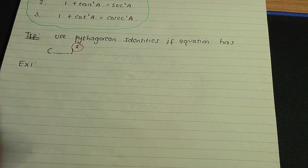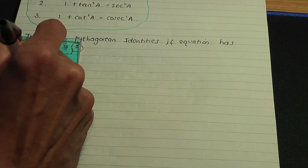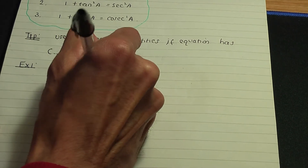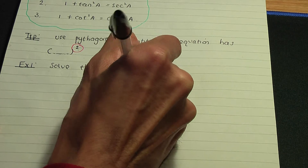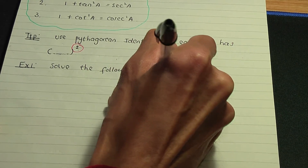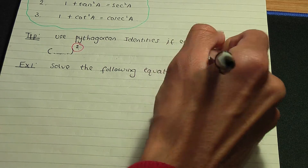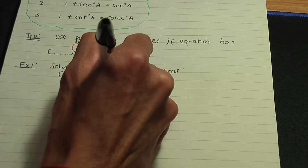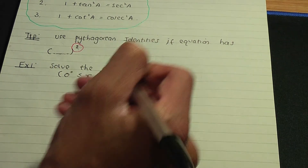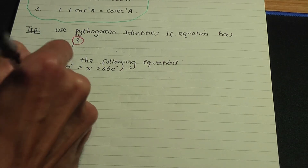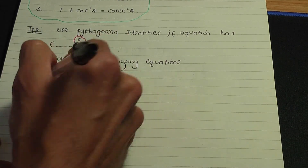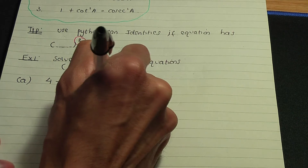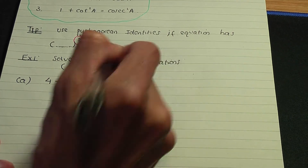Let me show you how we apply these identities with example one. We're going to solve the following trigonometric equations, where the angles x lie between zero and 360 degrees inclusive. For part A, we're going to solve: 4 minus 5 cos x equals 2 sine squared x.